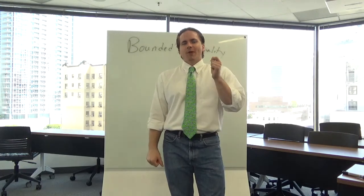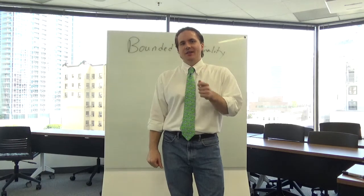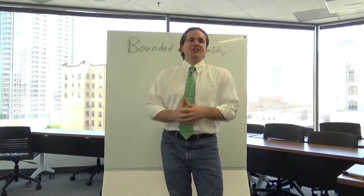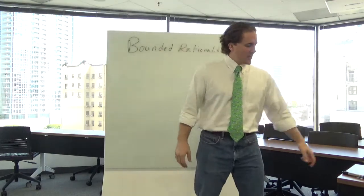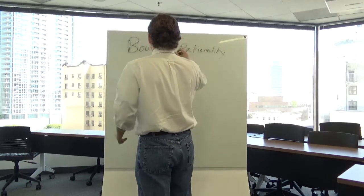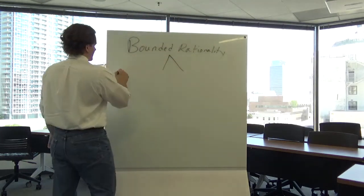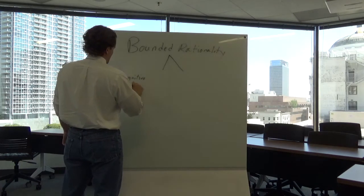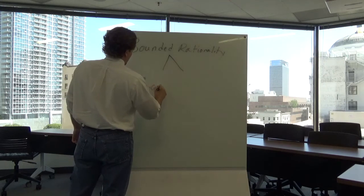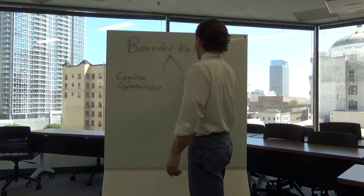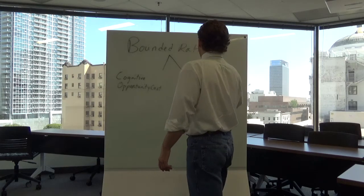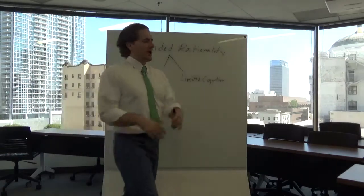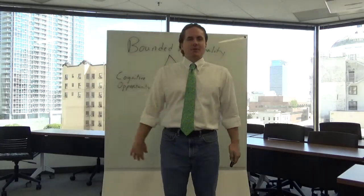The idea behind bounded rationality is that we don't necessarily have the cognitive ability or the time to always make the best possible decision. We typically make the decision that is easiest or most convenient for us at a given time. There are two ways of looking at bounded rationality: as a cognitive opportunity cost, and as limited cognition. The peanut butter example is a cognitive opportunity cost — you just don't have the time to think about all the options and make the best possible decision.